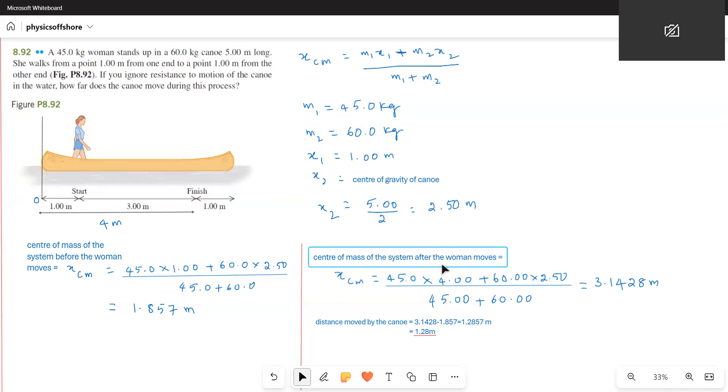Center of mass of the system after the woman moves: x_cm equals 45 times 4 meters from this origin. The woman will be 4 meters total distance. Plus 60 times the center of gravity of the canoe, which will not change. It will be at 2.5. So 45 times 4 plus 60 times 2.5 divided by total mass 45 plus 60 gives 3.1428 meters.